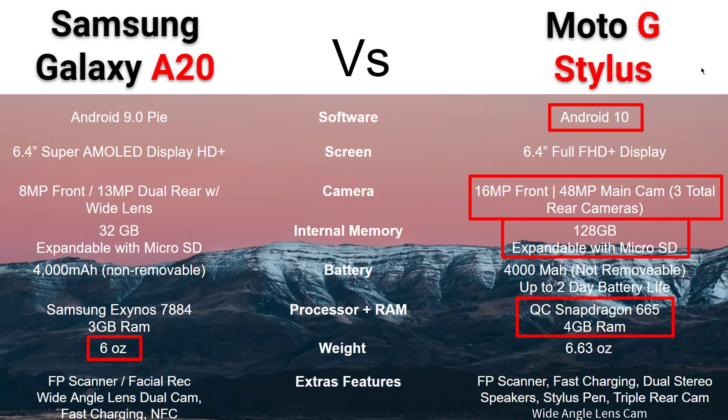Finally, let's go into extra features. The spec sheets are pretty similar with these two phones. Some standout features: the A20 does have NFC if you care about that, while the Moto doesn't have that. But you are going to get a stylus pen on the G Stylus, which the A20 doesn't have. The Moto also has that triple rear camera, which is pretty awesome, and you're getting dual stereo speakers with the G Stylus as well.